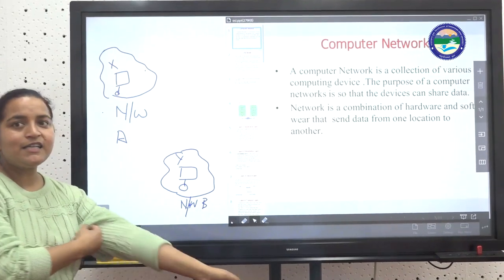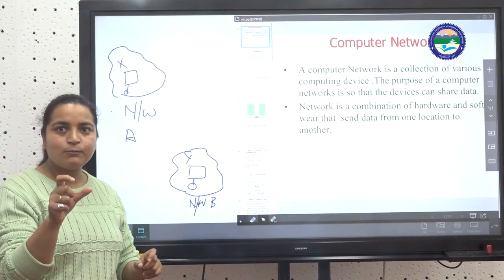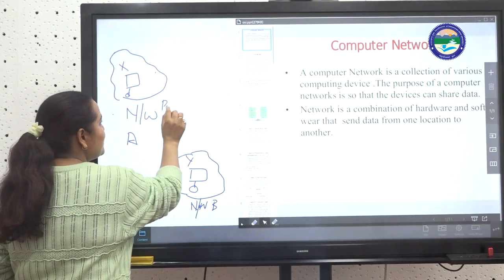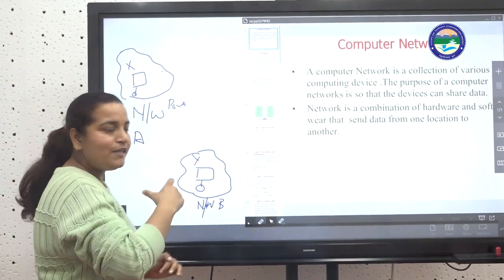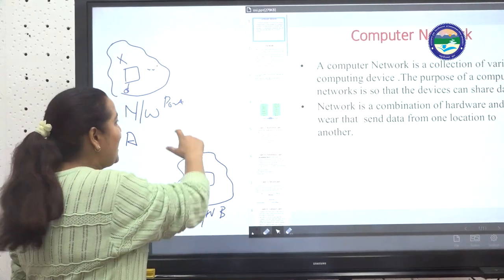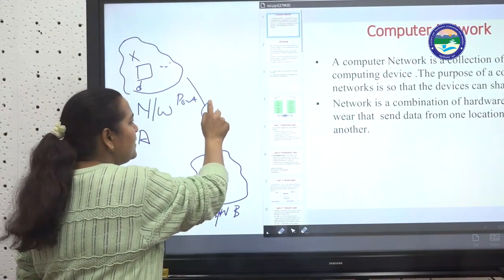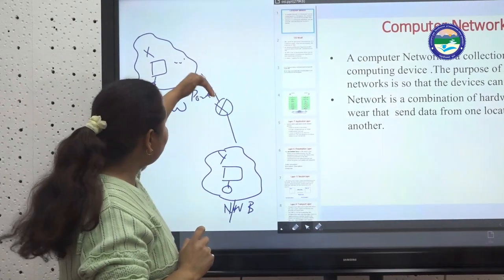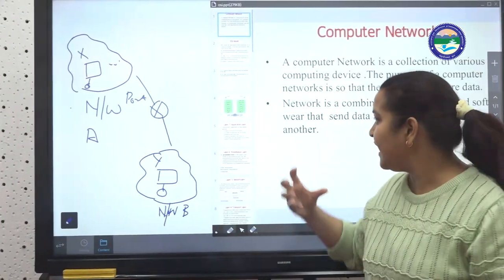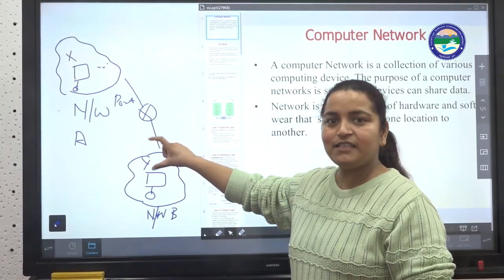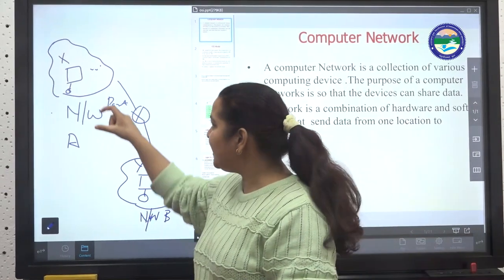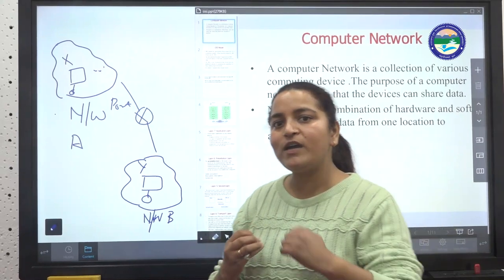In network A, on your terminal, you open a process like WhatsApp. The message from the process goes through your network device, which is connected to different routers. The router receives and checks which destination the message is for, searches for the destination network, and delivers it to the terminal and port. This is the OSI model requirement.